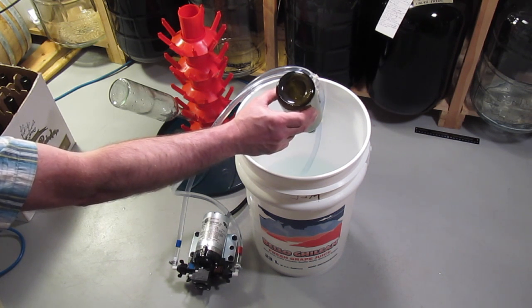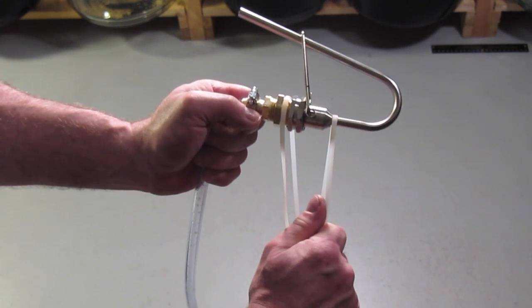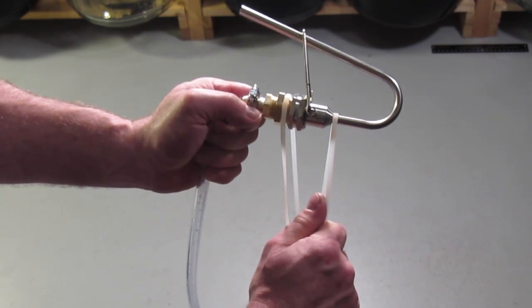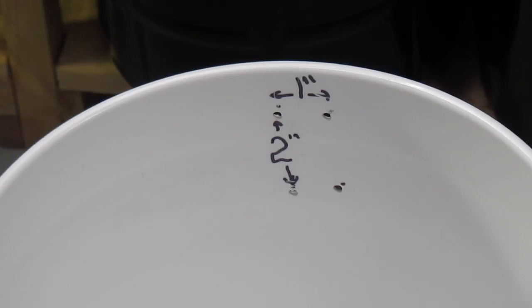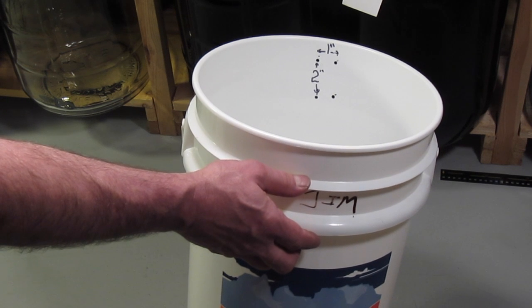Here is how the zip ties should be positioned on the stainless steel bottle washer with a built-in ball valve. Please note the drill indicator marks that I have drawn on the bucket. Drill the holes accordingly to quarter-inch size and install the zip ties to the bottle washer, then attach the pickup tube with zip tie to it.